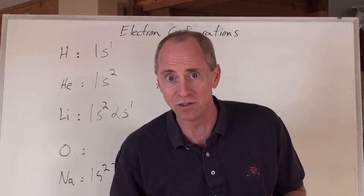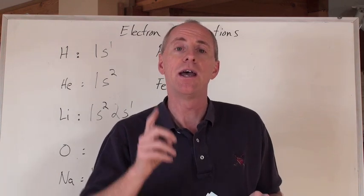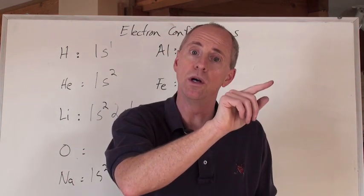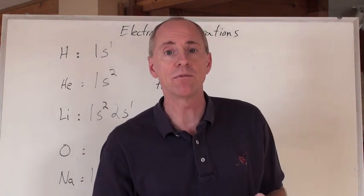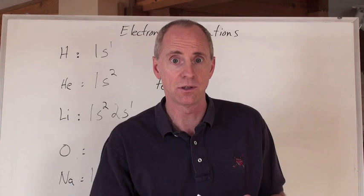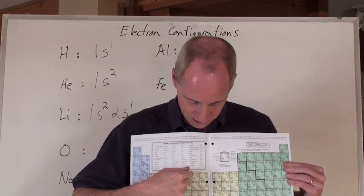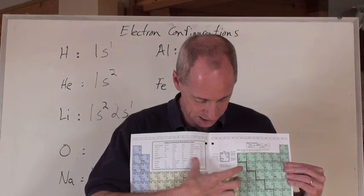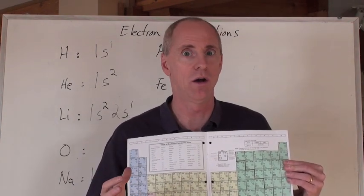Do you remember the d's? At n equals 3, you're allowed to have L equal 2, which had 5 sub orbitals in it. That means that those 5 sub orbitals could hold 10 electrons. 1, 2, 3, 4, 5, 6, 7, 8, 9, 10 in this yellow section here called the d block.